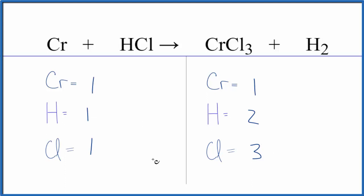Let's balance the chlorines first. So let's put a three in front of the HCl. When we do that, we have one times three, that'll balance the chlorine atoms. One times three, that'll give us three hydrogen atoms.